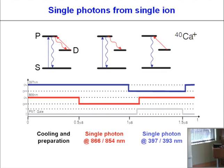Single photons from a single ion are produced in a straightforward way. We use three of the many levels available in calcium. After a period of cooling and preparation, we switch off one of the lasers — for example, the D2P laser is switched off — and then within a short time the ion will be optically pumped into the D level, releasing one red photon. Then we switch off the blue laser and switch on the red laser, releasing one blue photon. This is how we produce single photons in the lab.